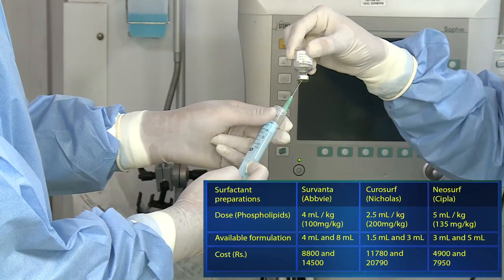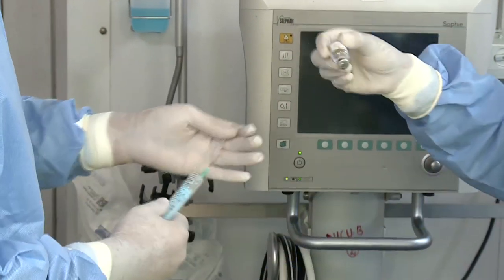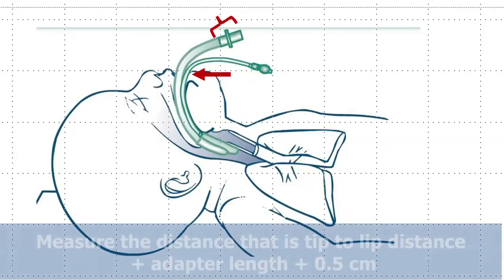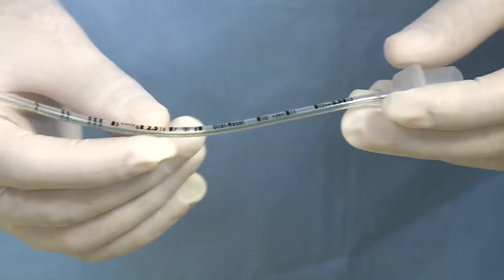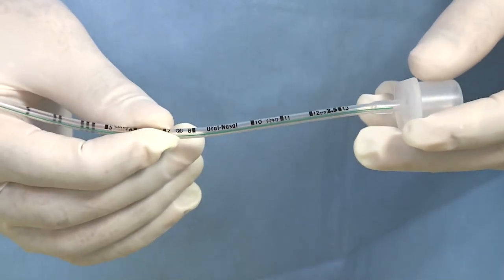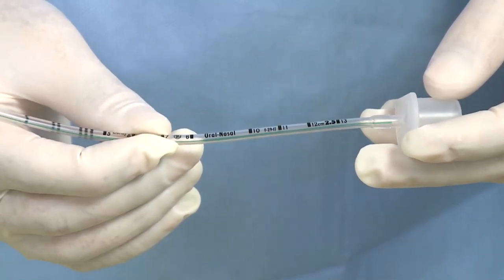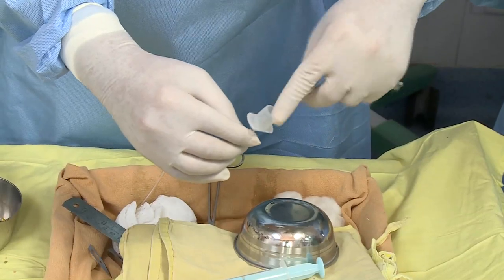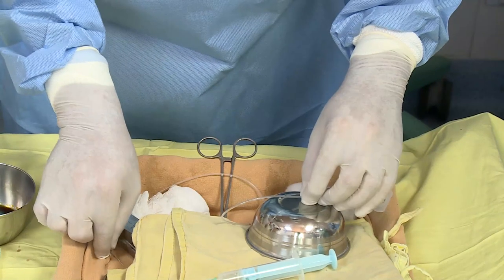Measure the distance — that is, tip-to-lip distance plus adapter length plus 0.5 centimeters. Alternatively, one can take another ET tube and measure the length. Cut a 5 French orogastric tube distally at the measured length.